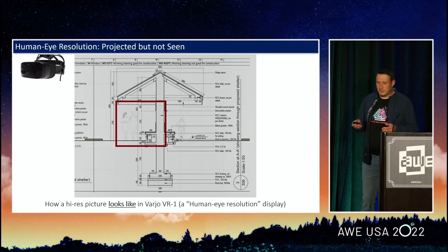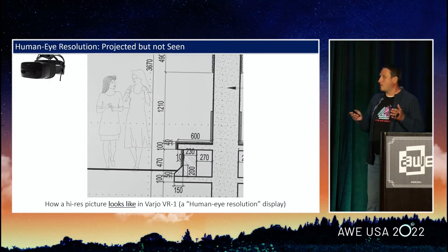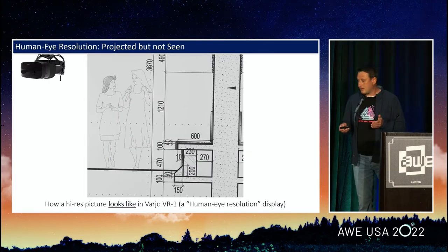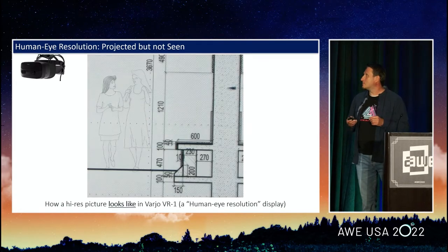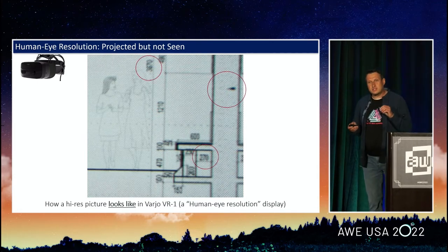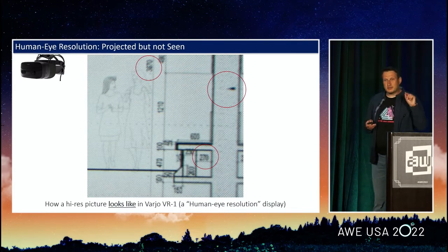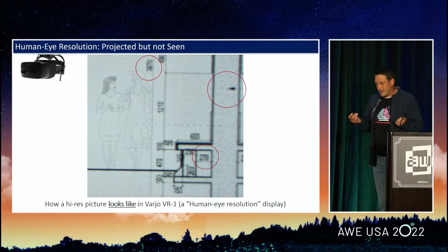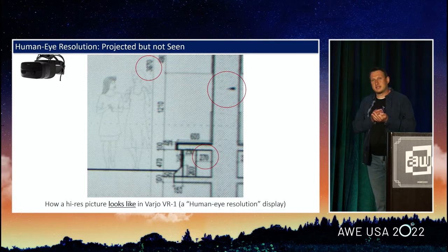So we used this fine drawing to test Varjo's display. This is how the display picture looks. And here's how it looks to the human eye in that display. Quite different — look at that blur, look at that fringing. The human eye resolution was projected but never got to the human eye. It appears that simply increasing the pixel density doesn't work.